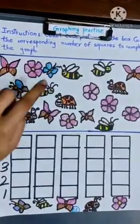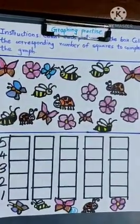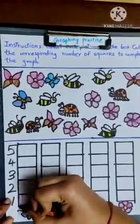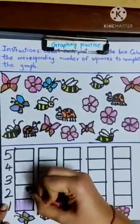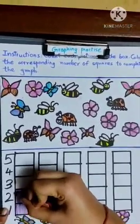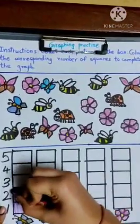There are one, two, two blue winged butterflies. So, we will color two boxes over here. If there are two butterflies, you have to color only two boxes.